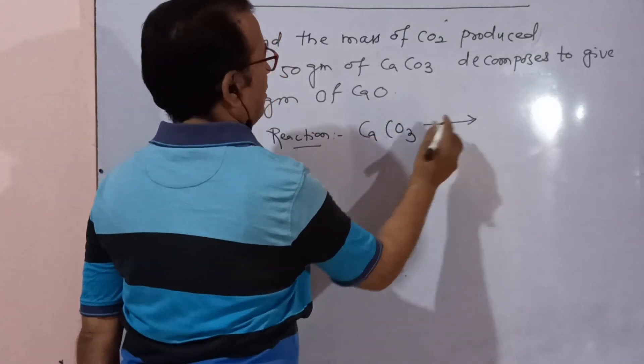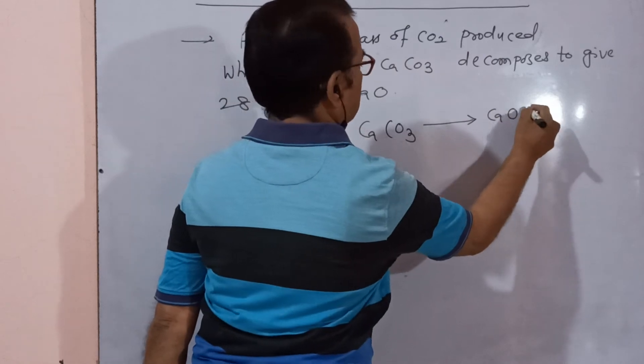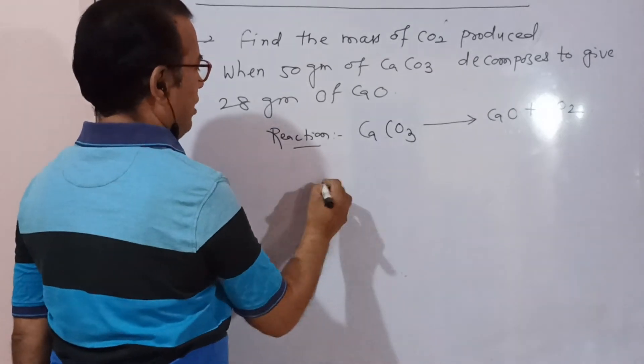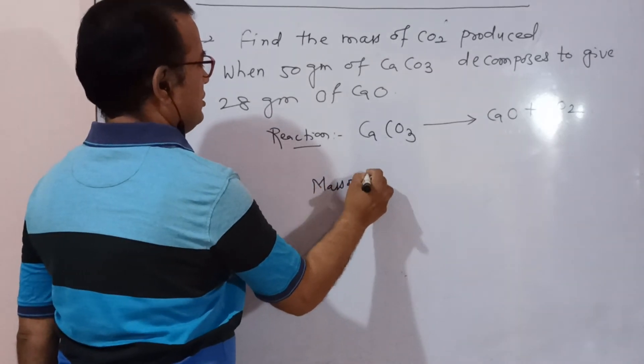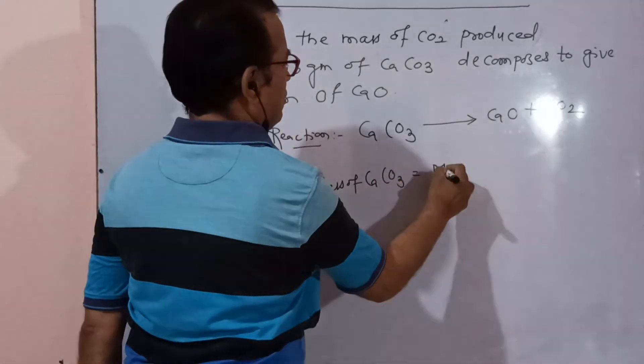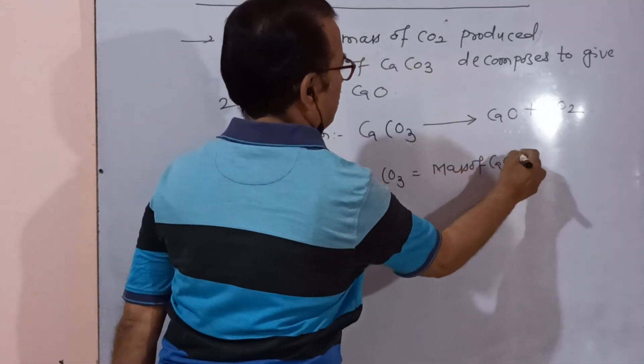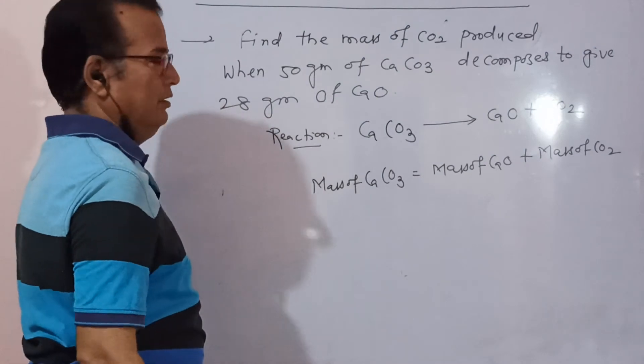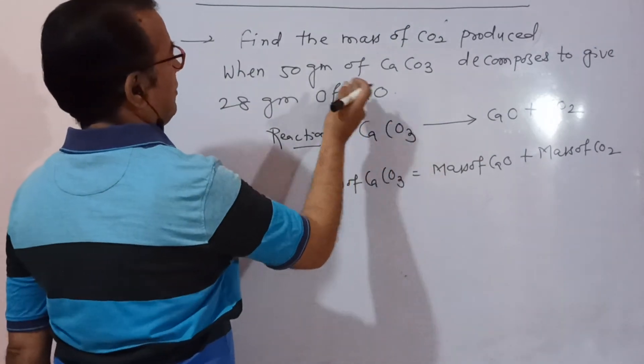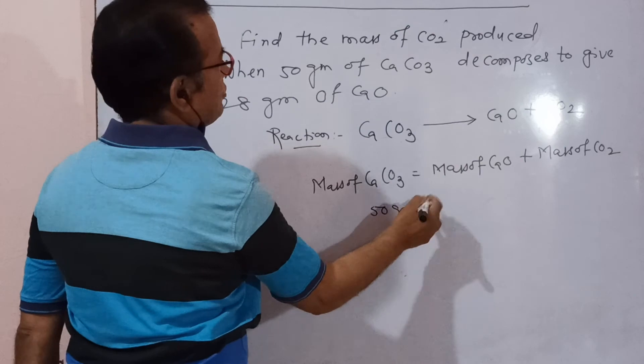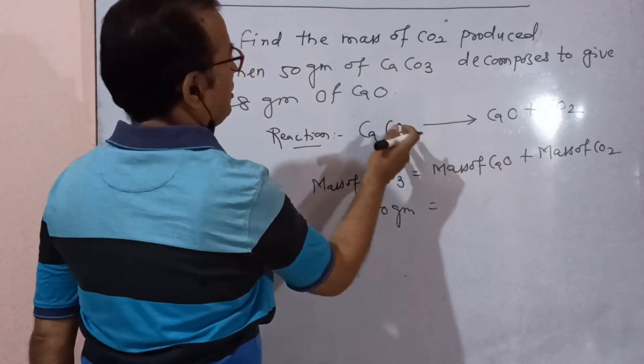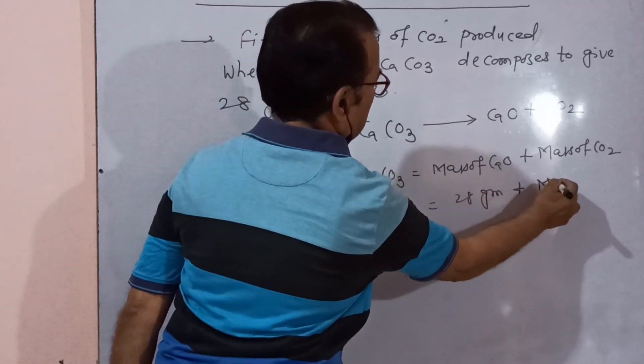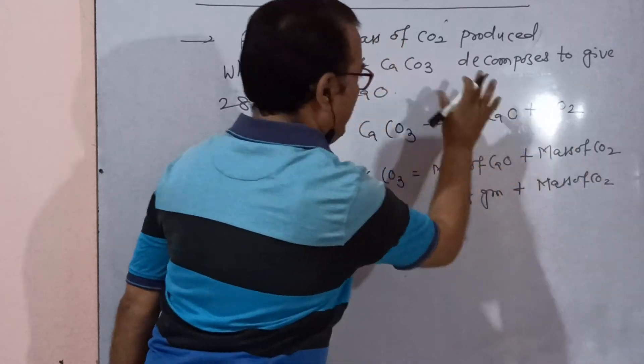The reaction is CaCO3, after decomposition, it gives CaO plus CO2. So mass of CaCO3 is equal to mass of CaO plus mass of CO2. And mass of CaCO3 you have is 50 gram. Mass of CaO you have is 28 gram. 28 gram plus mass of CO2. This is a simple problem.